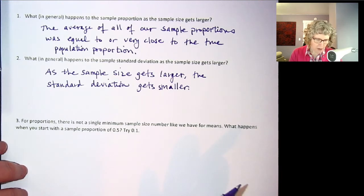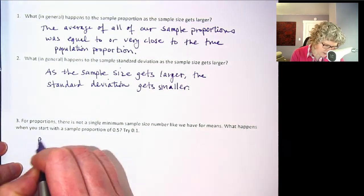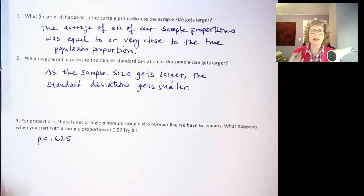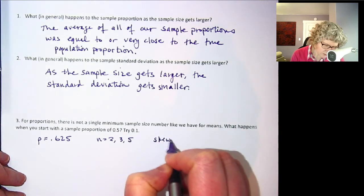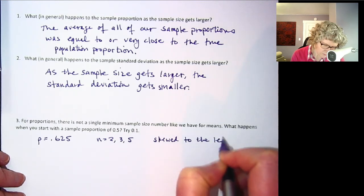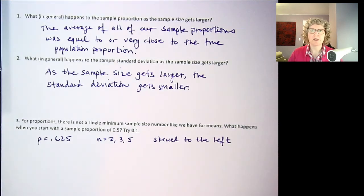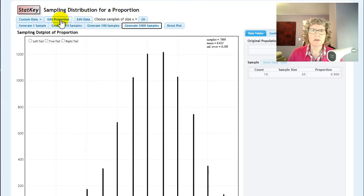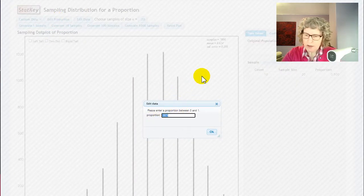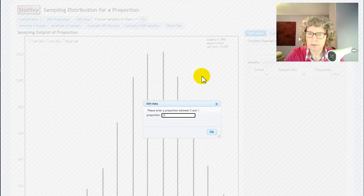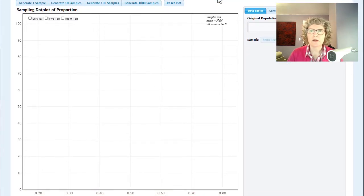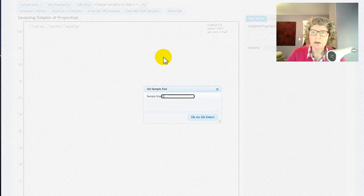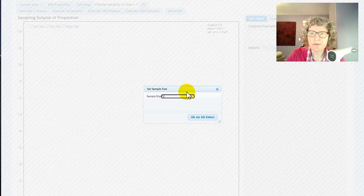We did 0.625 and so when we looked at our original sample sizes like n equals 2, 3, and 5 this was skewed to the left. Not super skewed but a little skewed to the left. Okay now I want to go to another one and I want to try, I'm going to hit edit proportion, I'm going to put in 0.5. Let's do 5.